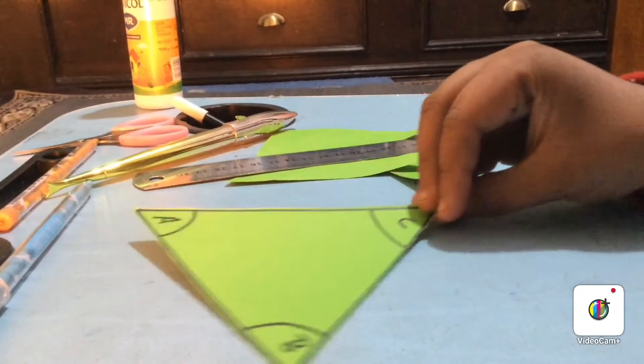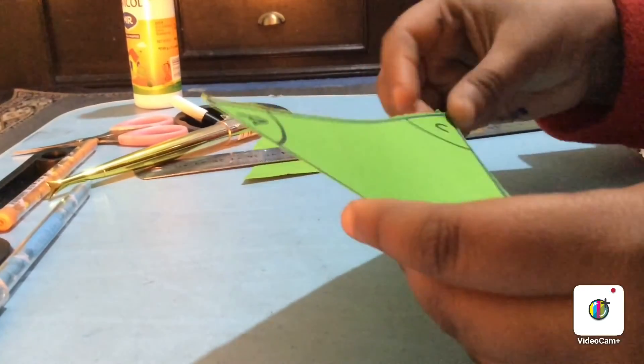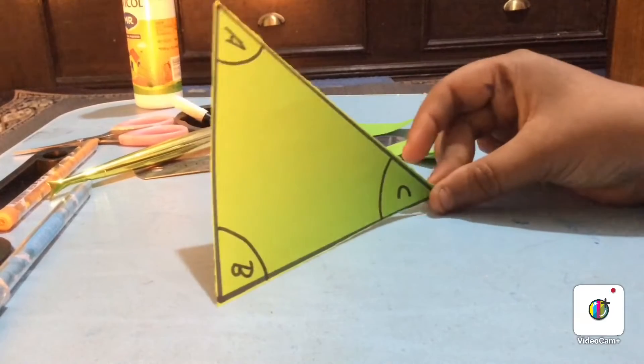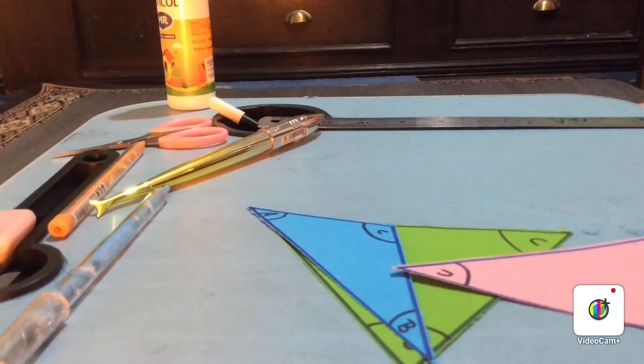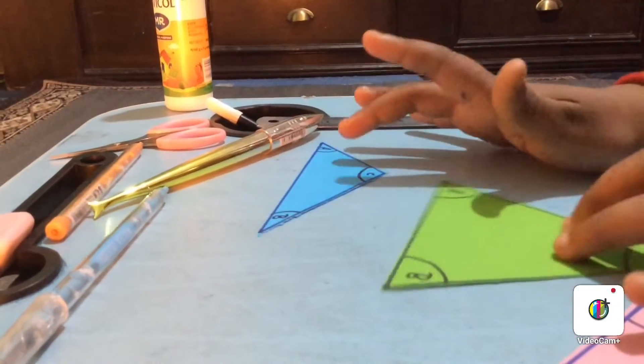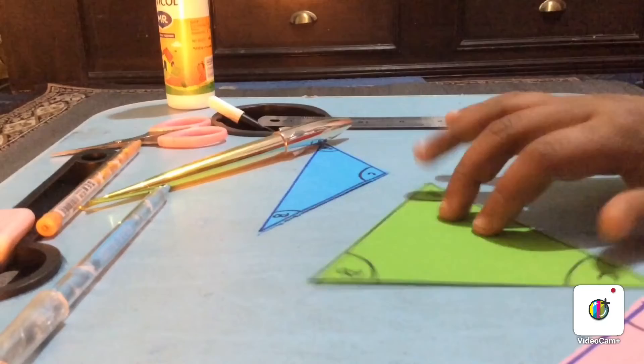The equilateral triangle is free now, as you can see. Now I'm going to cut the other triangles in the same way. All of my triangles are free now.